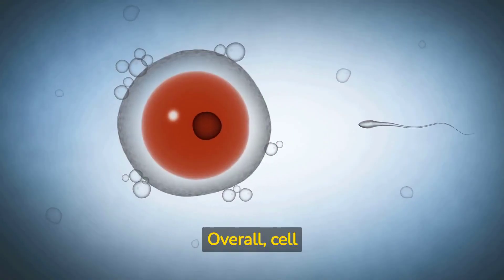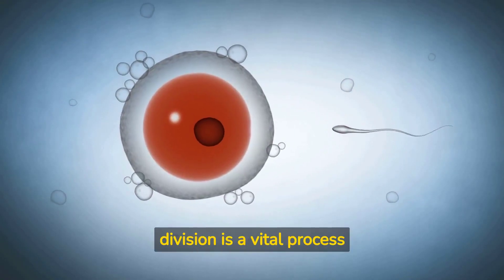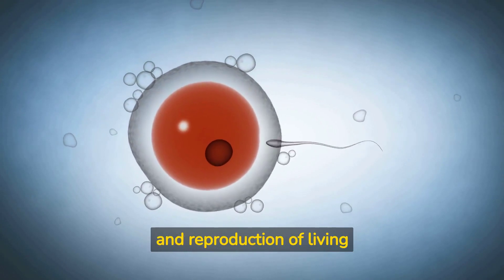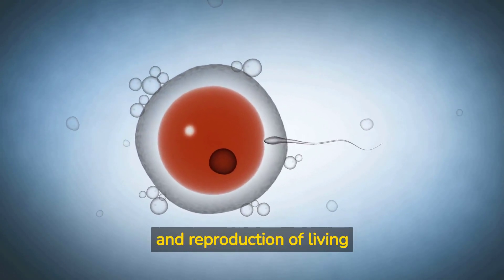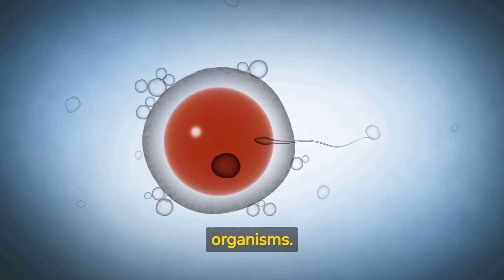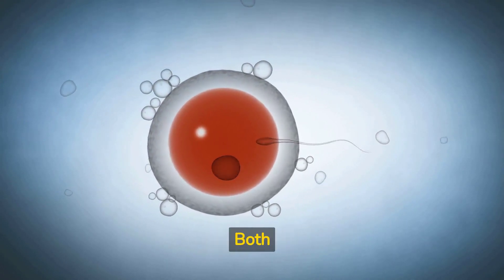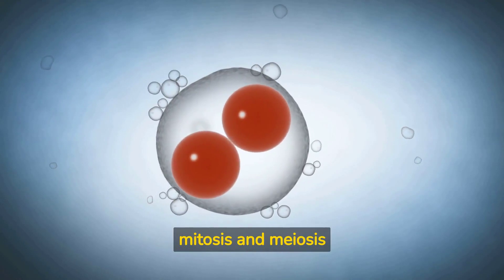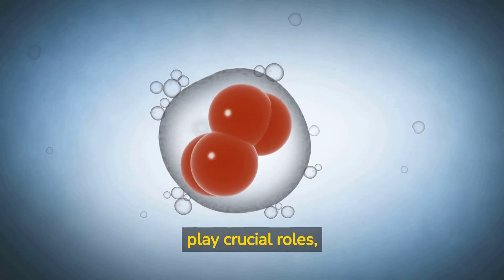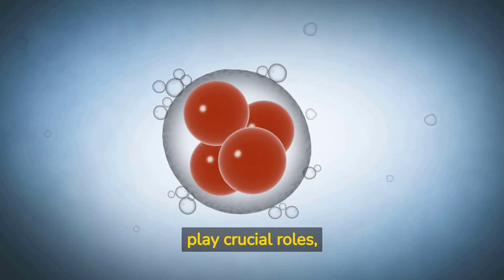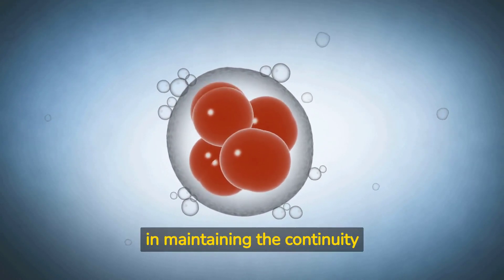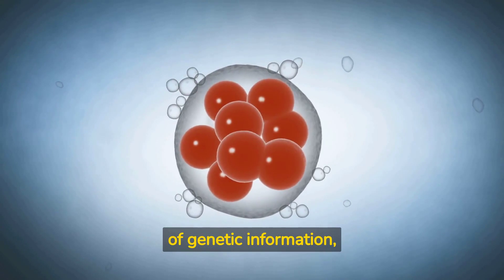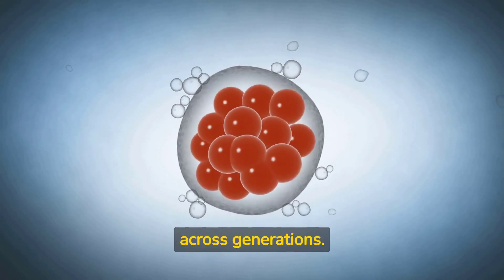Overall, cell division is a vital process for the growth, repair, and reproduction of living organisms. Both mitosis and meiosis play crucial roles in maintaining the continuity of genetic information across generations.